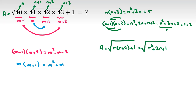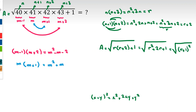We know that x plus y squared equals x squared plus 2xy plus y squared, so inside the square root we have r plus 1 squared. Since r is positive (because n equals 40), the square root of r plus 1 squared is simply r plus 1.